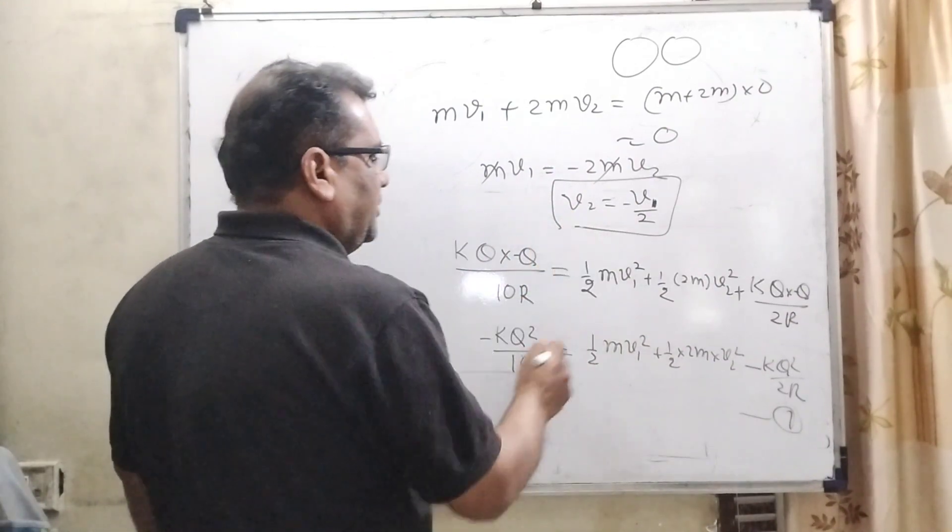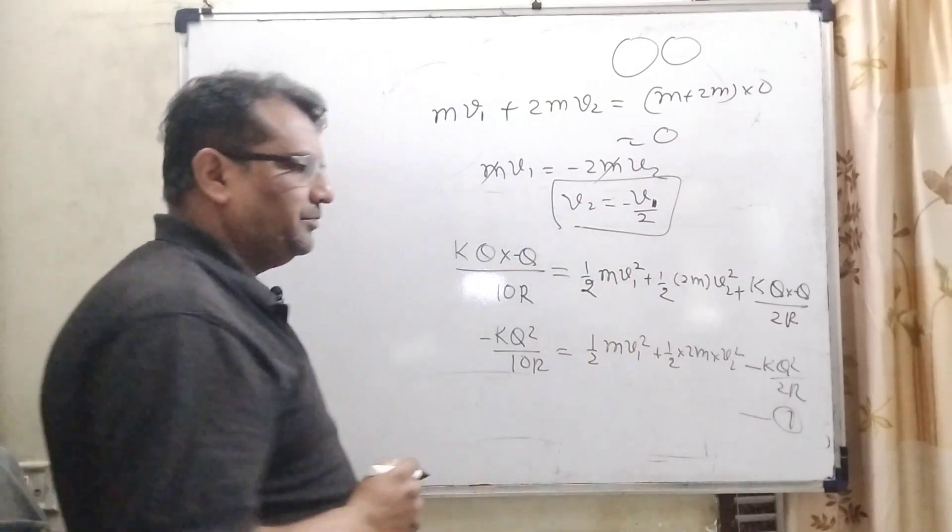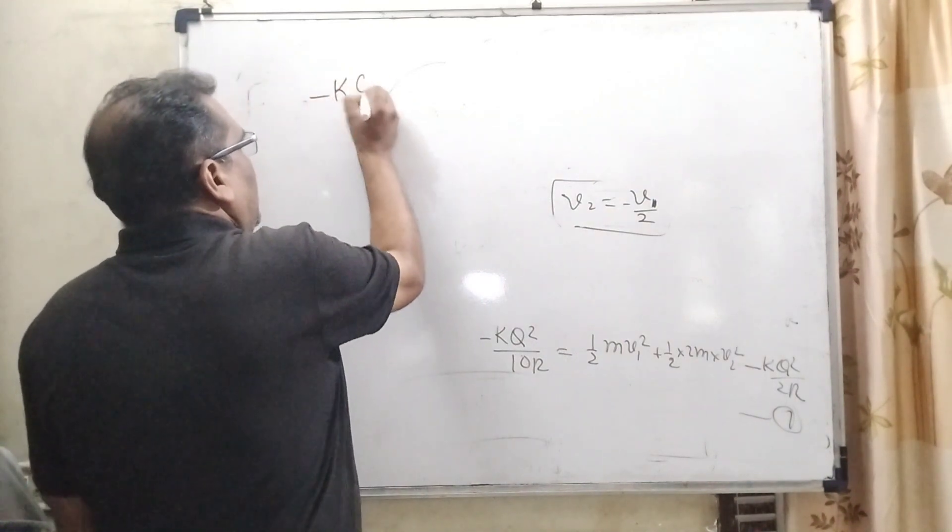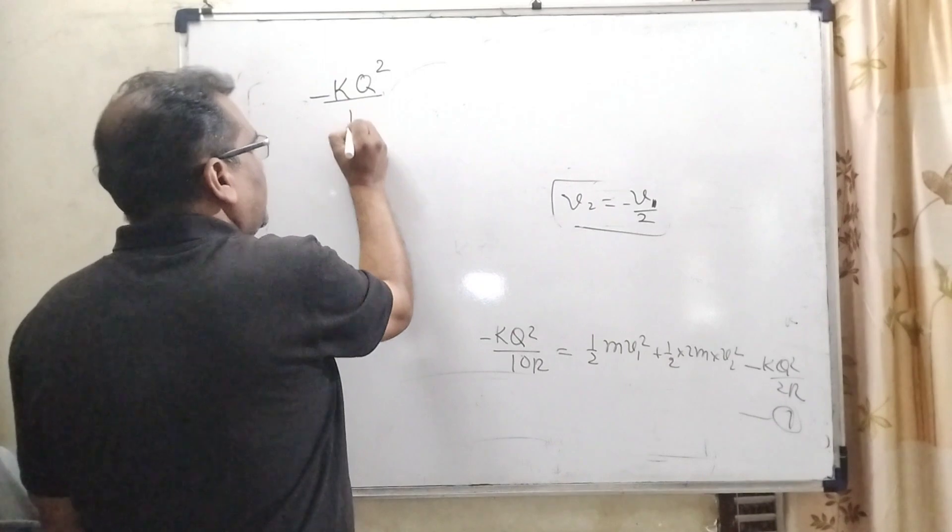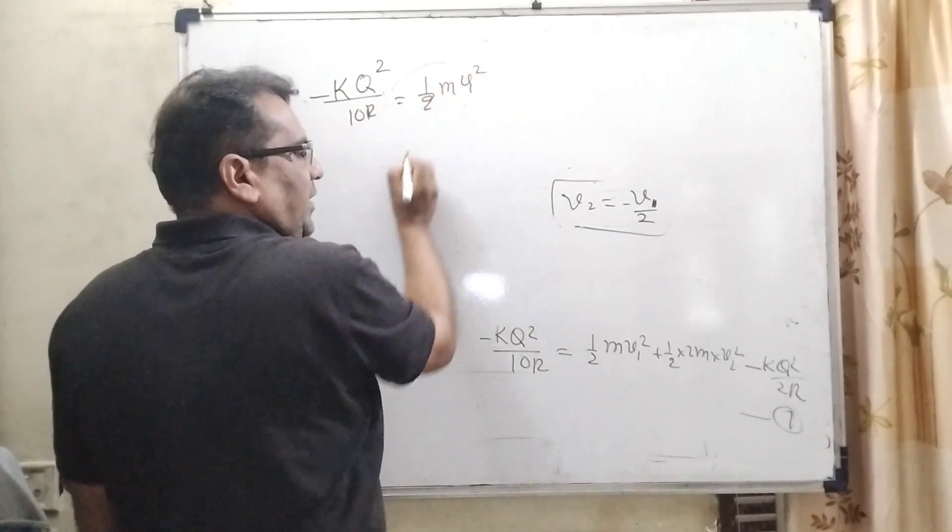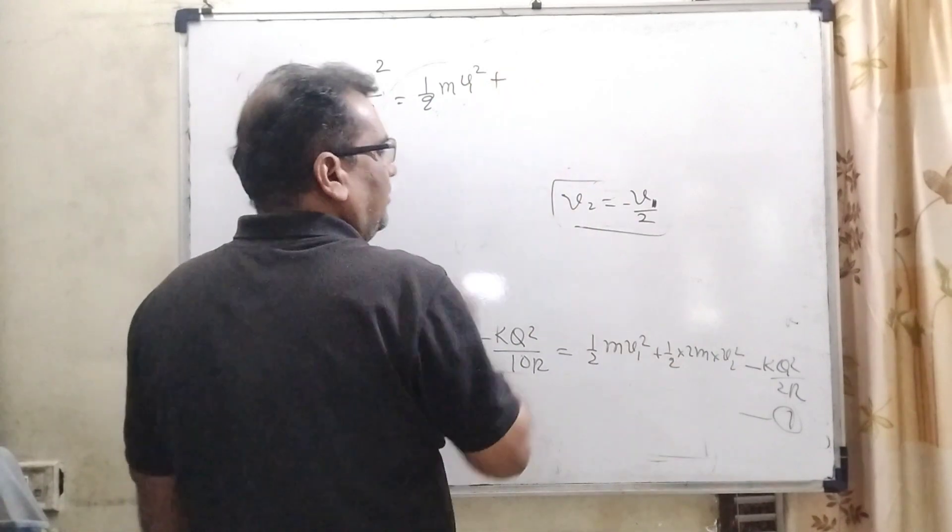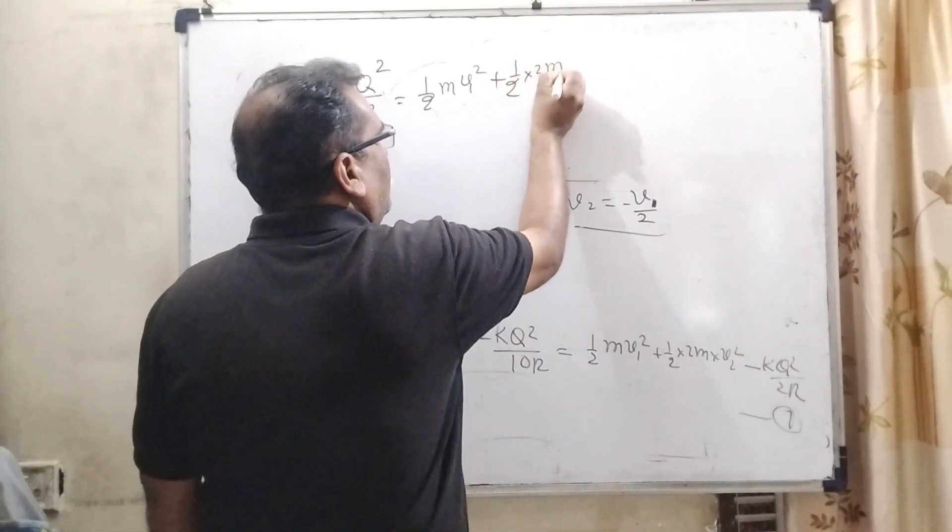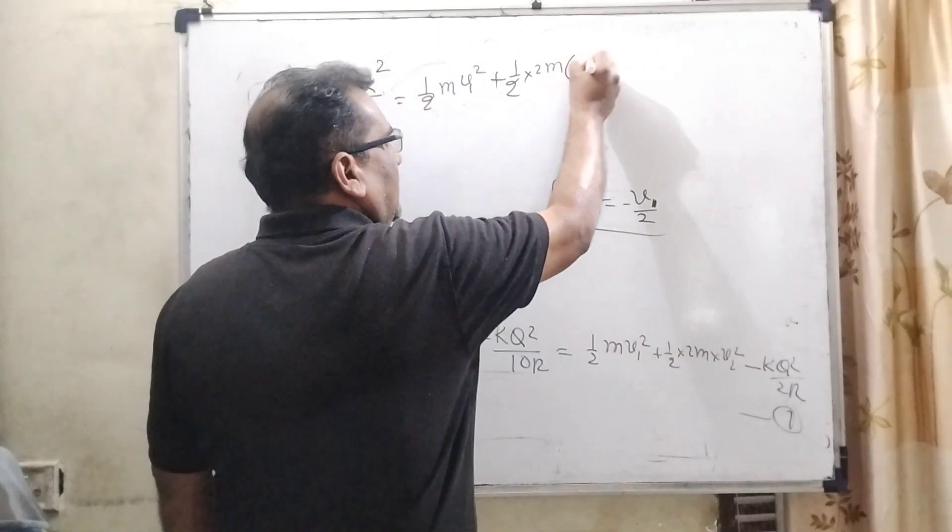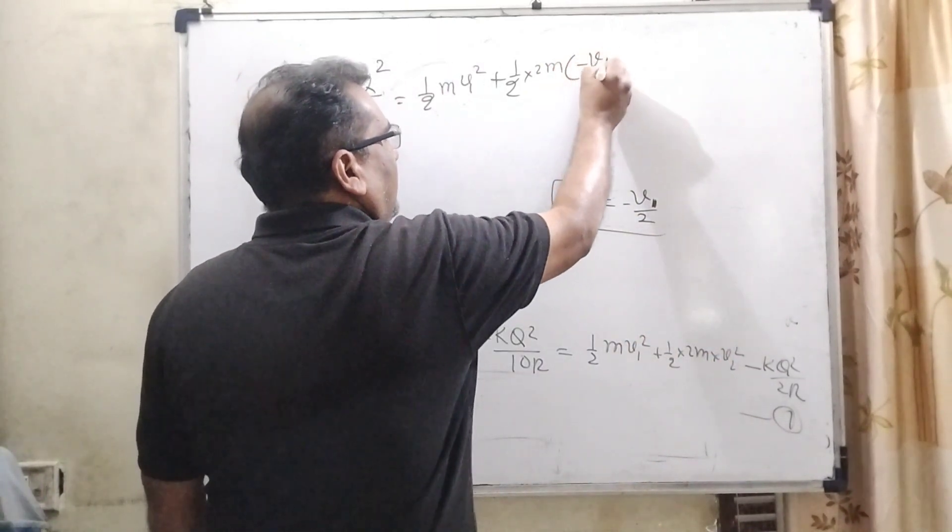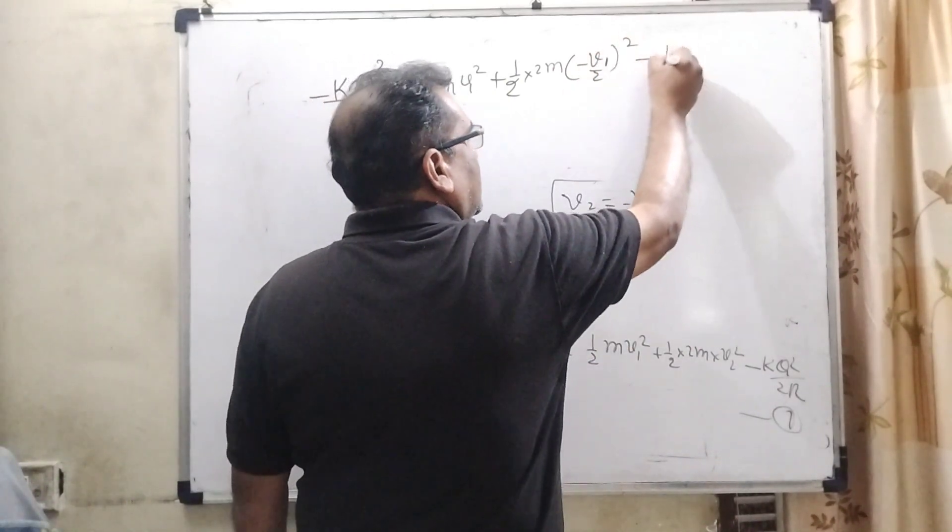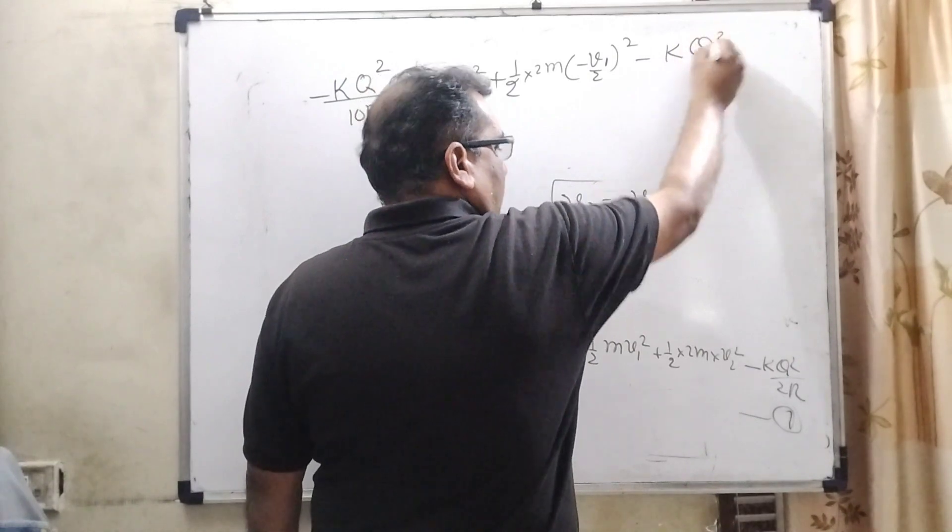Now, this value is substitute in equation number first. So, now, minus KQ square upon 10R equals half M V1 square here plus 1 by 2, 2m and the velocity of V2 in bracket minus V1 by 2 whole square minus KQ square upon 2R.